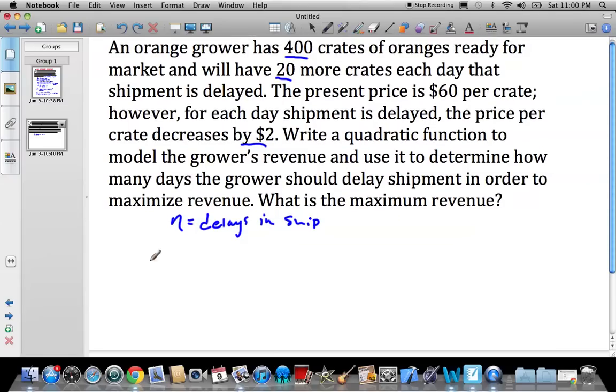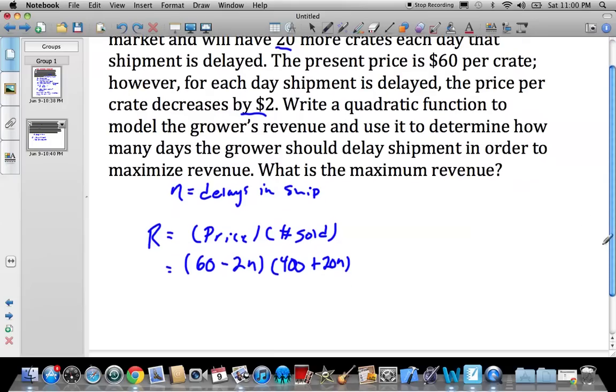So again, the idea behind revenue is the price times the number sold. So sometimes the price can be profit. In this case, the present price is $60 per crate. So it starts at $60 but decreases for each day the shipment is delayed by $2, so 60 minus 2n. So that's the price of the crate. And then it starts at 400, but the number increases by n, or increases by 20 crates each day it's delayed. So 400 plus 20n. So you want to find the maximum revenue.